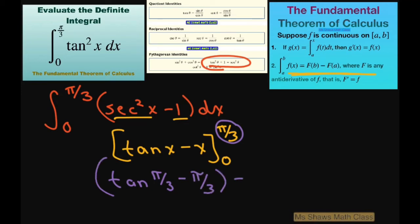And then minus tan(0) - 0. This whole thing just equals zero. Tan of zero is zero.